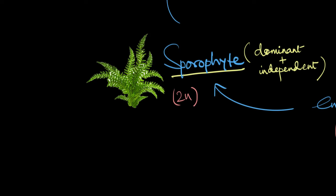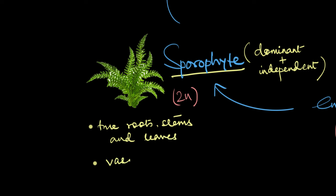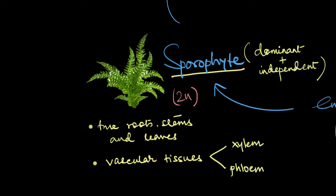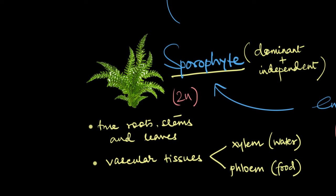The structure of this sporophyte is quite fascinating. It is considerably large and prominent and shows the presence of true roots, stems, and leaves. That means these roots, stems, and leaves have vascular tissues in them. In fact, vascular tissues like xylem and phloem evolved for the very first time in pteridophytes. These vascular tissues are specialized to conduct food and water throughout the entire plant — xylem specifically conducts water and phloem conducts food.